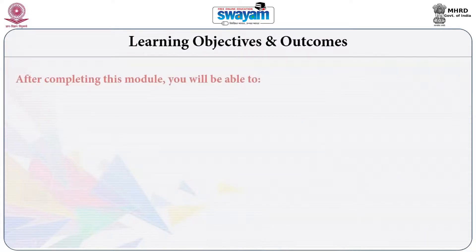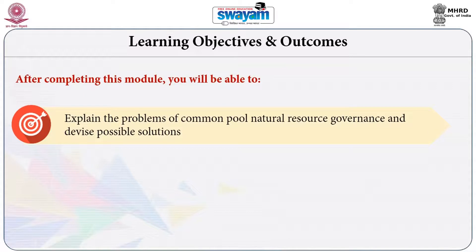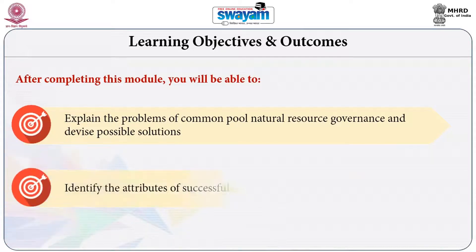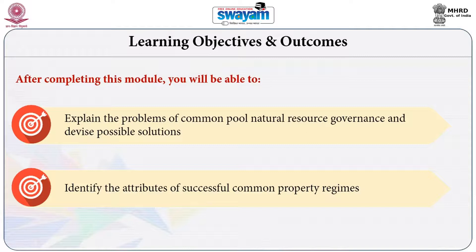After successfully completing this module, you will be able to explain the problems of common pool resources and devise possible solutions for governance of these resources. You will also be able to identify the attributes of successful common property regimes and explain how resources can be governed in a better manner with significant benefit to the local communities who depend upon these resources for their survival and livelihood.